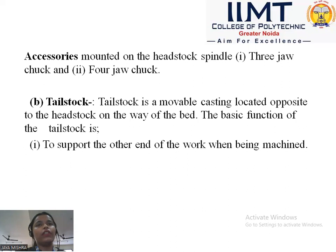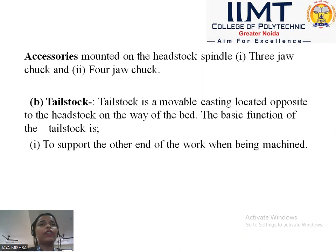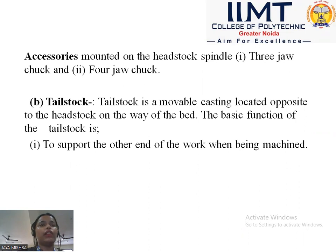The second part is the tailstock. The tailstock is a movable casting located opposite to the headstock on the ways of the bed — headstock is on the left and tailstock is on the right. The difference is that the headstock is stationary while the tailstock is movable. The main work of the tailstock is to hold tools such as drill bits or reamers, and to support the other end of longer workpieces during operations like reaming and drilling.